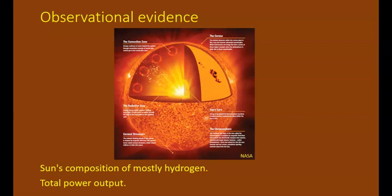The primary pieces of evidence include the composition and total power output of the Sun. We know the Sun is made mostly of hydrogen, and the observed power output can only be explained using a nuclear reaction involving mostly this element.